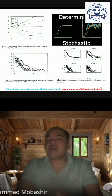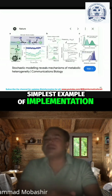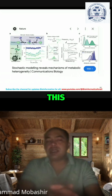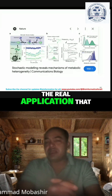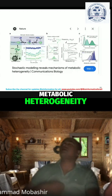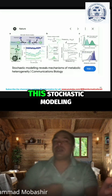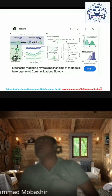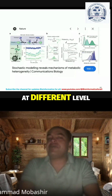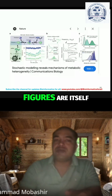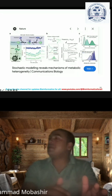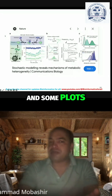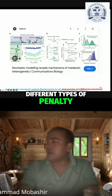There is another example of implementation published in the Nature Communications Biology journal. The title itself reveals the real application: stochastic modeling reveals the mechanisms of metabolic heterogeneity. This stochastic modeling was applied to understand the diversity of metabolic processes at different levels. The figures show details from the beginning model design using Michaelis-Menten kinetics, various plots, different mathematical equations, penalty plots, and finally the analysis.